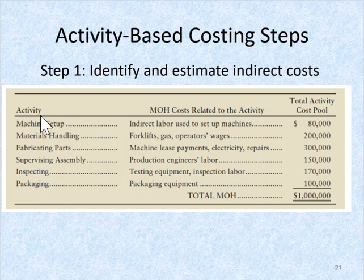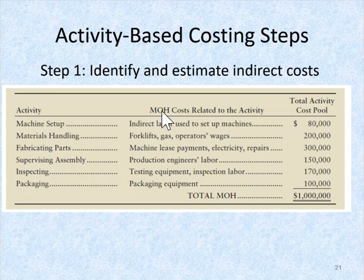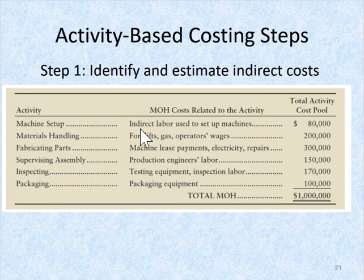The first step is to identify and estimate the indirect cost. We have to look at what activities are involved in the production of a particular product and then look at the overhead costs related to that activity. For example, machine setup — the cost involved in setting up a machine for a production run.